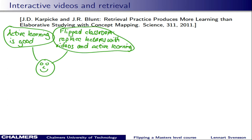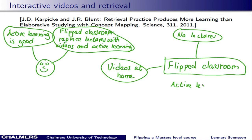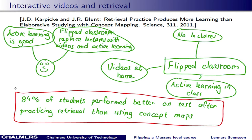How much they learned by doing this was then compared to what they learned by studying with a concept map — simply a diagram that illustrates relationships between different concepts. The following is a first attempt to construct a small concept map of what you've heard so far in this video. Karpicke and Blunt then made the perhaps surprising observation that as many as 84% of the students performed better on the final tests after practicing retrieval compared to when they were using concept maps.